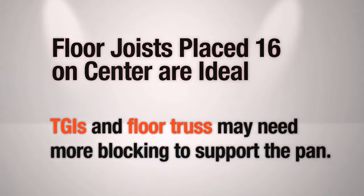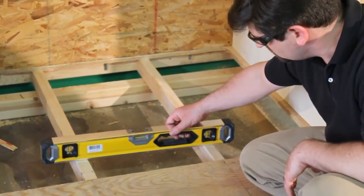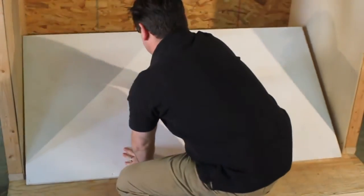TGIs and floor truss are often spaced more widely. If that is the case, you need to add more blocking to support the pan. An important thing you'll need to double check is that you have a level floor where you'll be setting the pan. You have to check the floor for level in both directions.